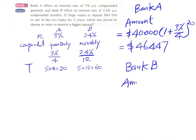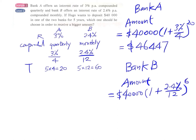For Bank B, the amount will be $40,000 multiplied by (1 + 2.4%/12) — the adjusted interest rate for Bank B — with 60 intervals, meaning 60 months, for calculating the compound interest. Our calculator gives us the answer: $45,094.